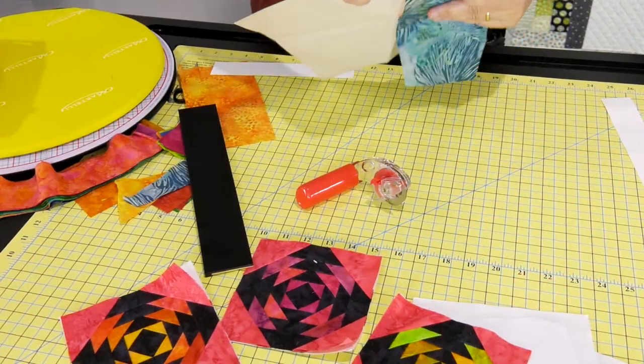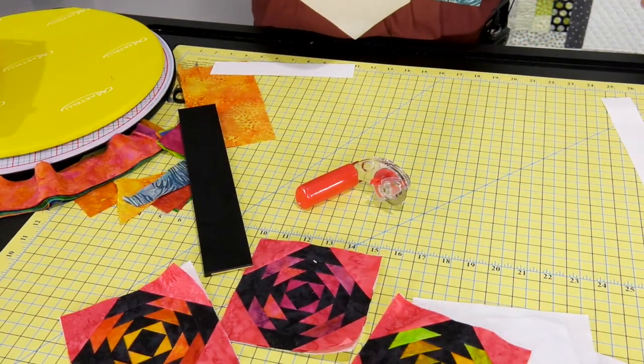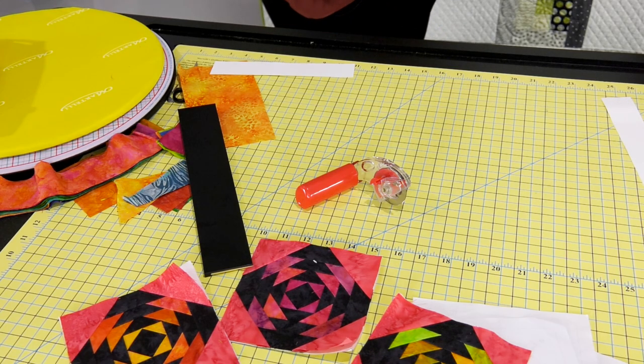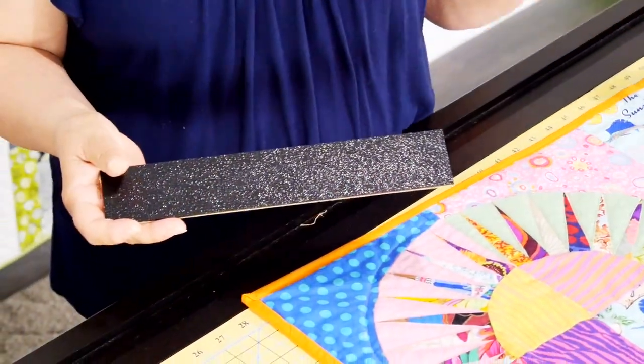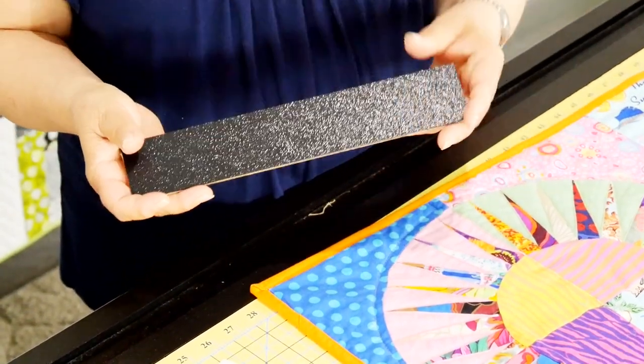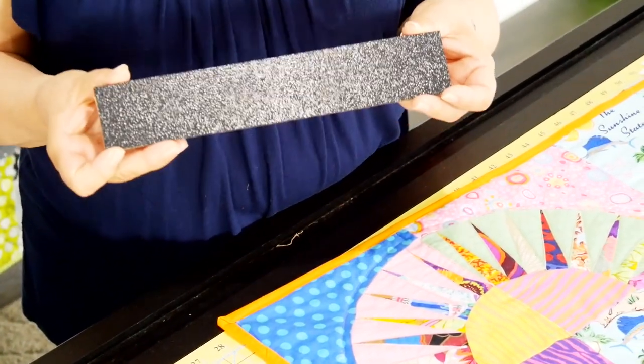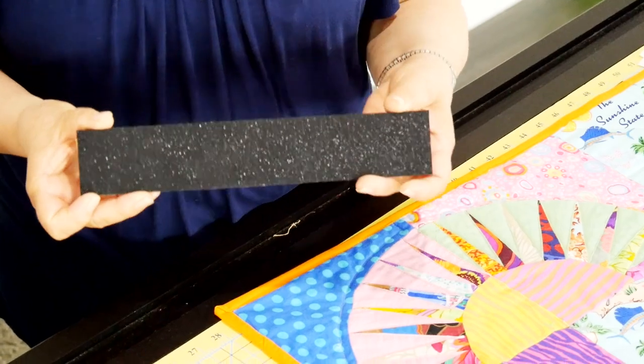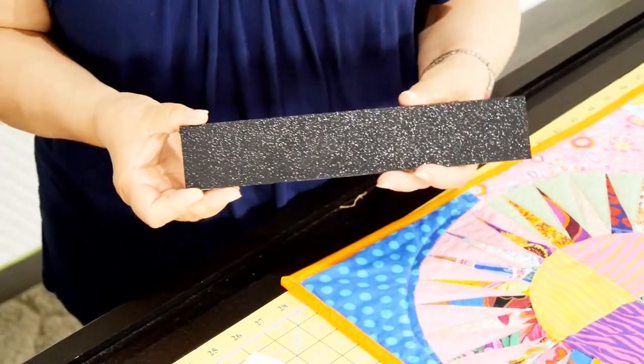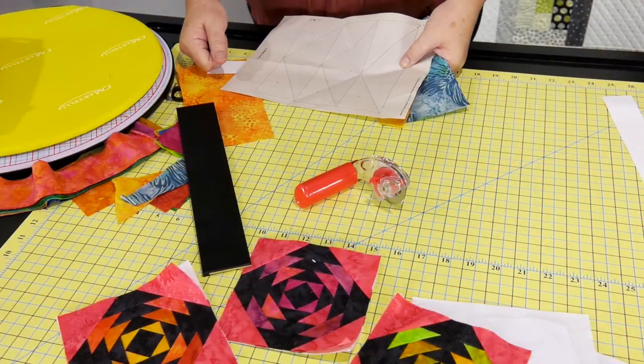In our class that's coming up in January, we're going to show you how to paper piece and how to use this ruler. It's really very simple. You'll catch on really quick for people who have never paper pieced before. And the ones who have, they're going to love this because of the non-slip grip. I'm going to sew right on that line.